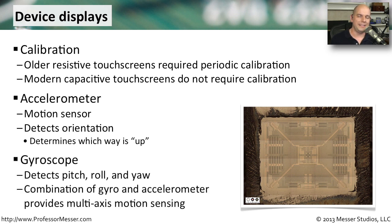Newer mobile devices take that idea one step further — inside the device is a gyroscope, which not only detects which way is up, but also detects pitch, roll, and yaw. You now have the combination of a gyroscope and an accelerometer inside these mobile devices. You see these used for newer games and technologies — for instance, panoramas, where the phone knows exactly where it is in space and stitches together pictures to give you a perfect panorama.